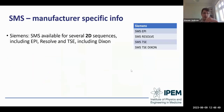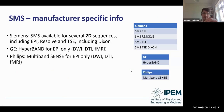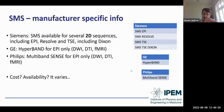For SMS manufacturer-specific information: on Siemens it's available for several 2D sequences including EPI, RESOLVE, and Turbo Spin Echo including Dixon. On GE it's available for EPI only, usable for diffusion-weighted imaging, diffusion-tensor imaging, and fMRI. Philips' Multiband Sense technique is currently available for EPI only with the same applications. Some of these are 3T only. Cost and availability vary for each technique, and the return on investment in terms of image quality and patient throughput will differ between manufacturers.